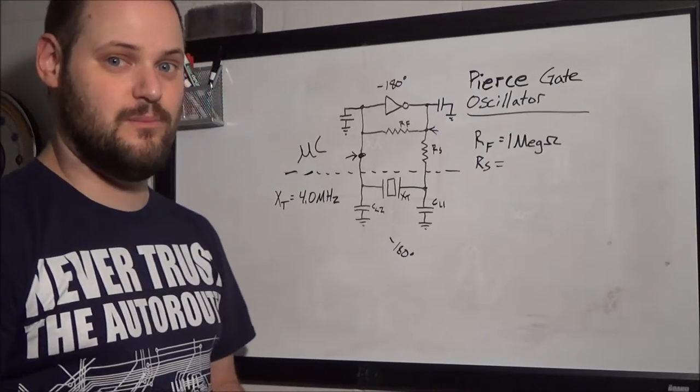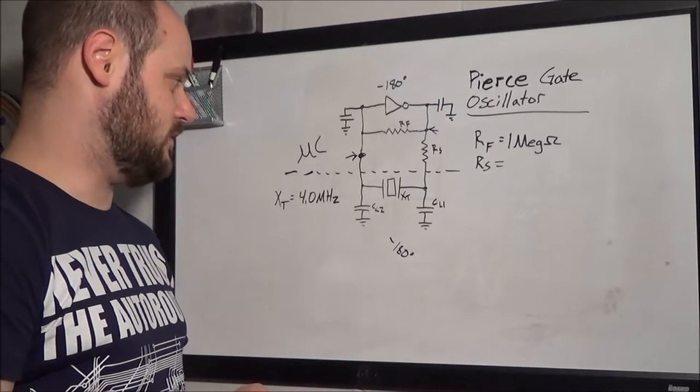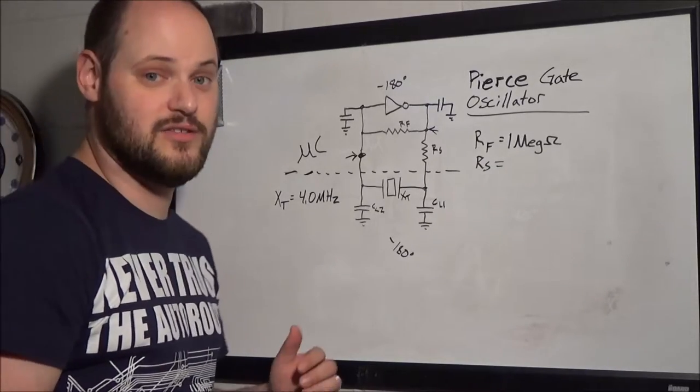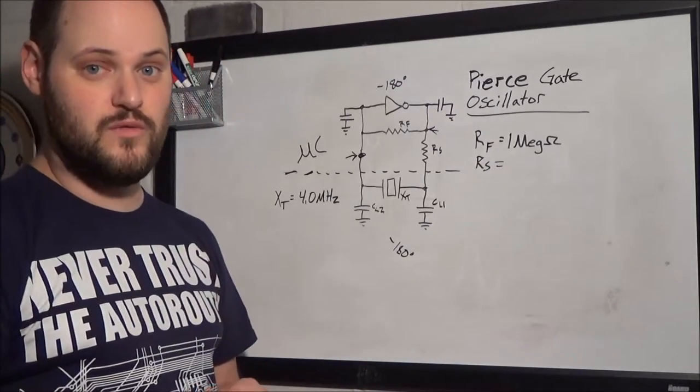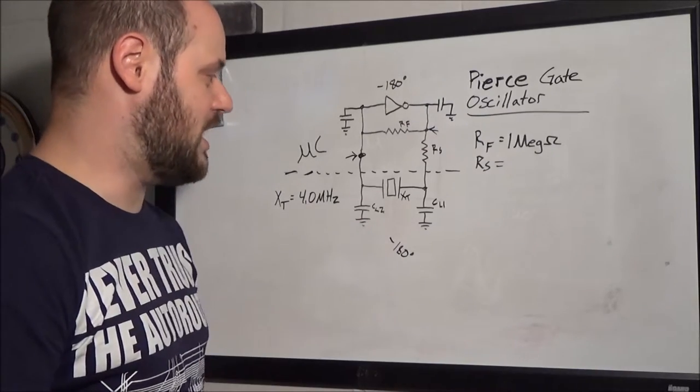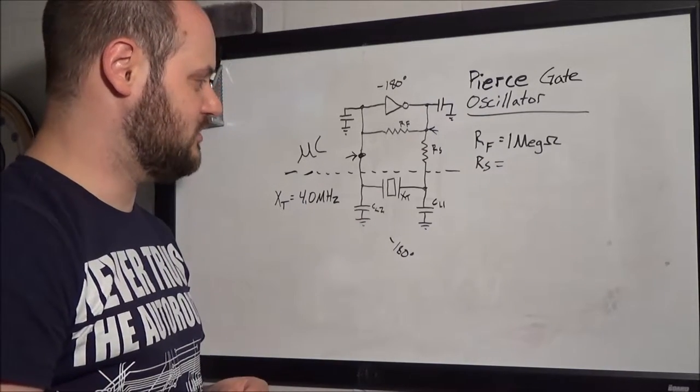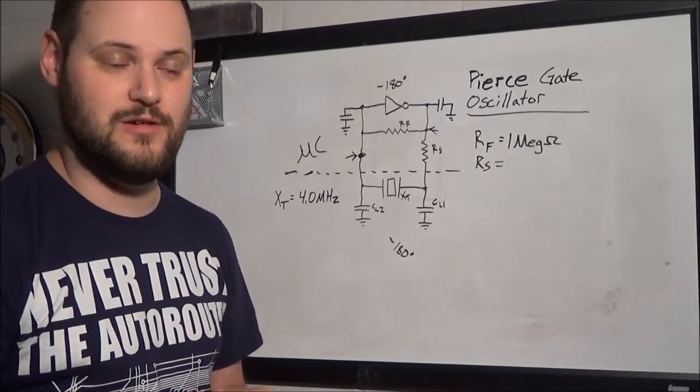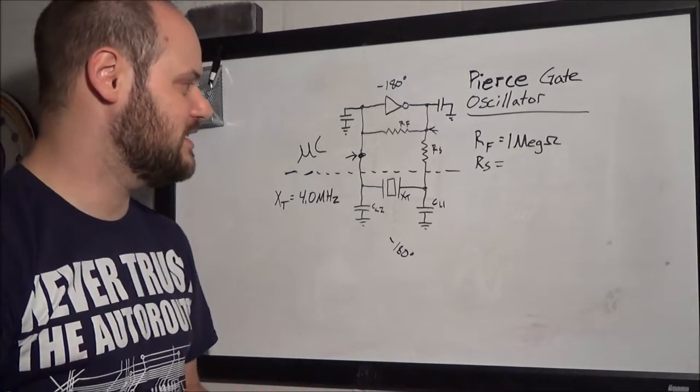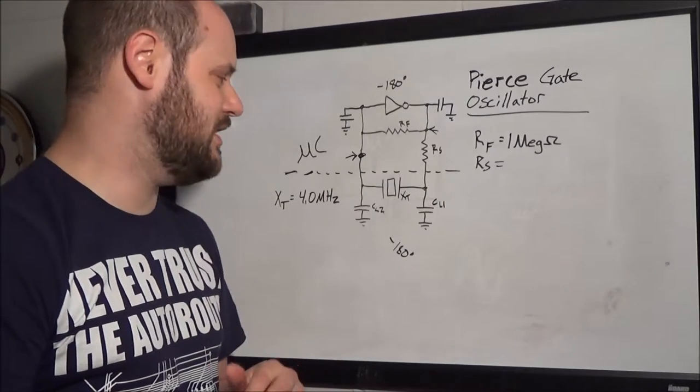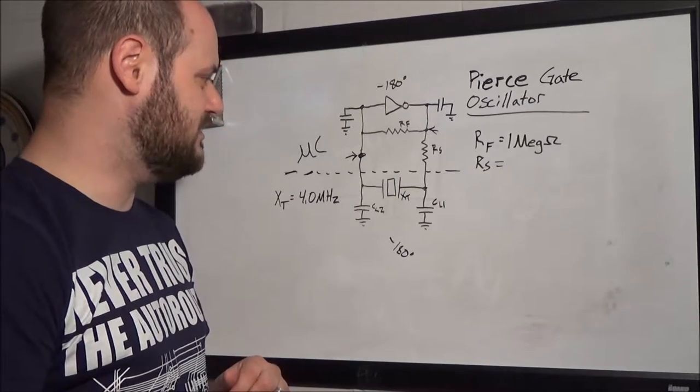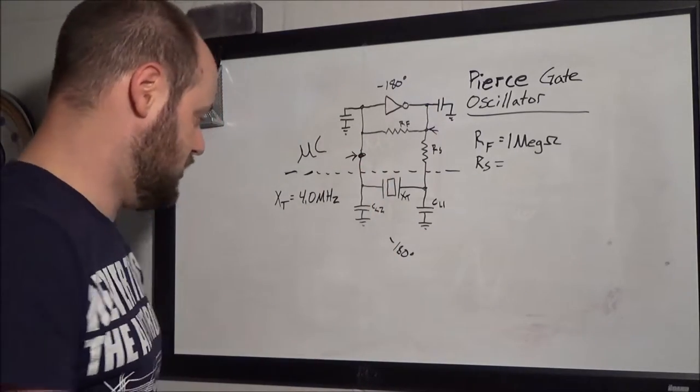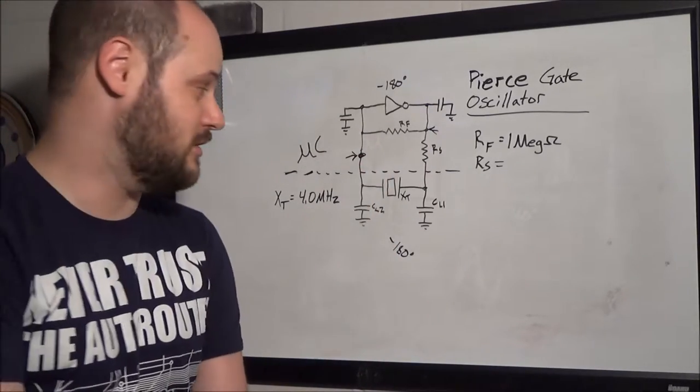So, when you buy a crystal from any given manufacturer, it's going to have a certain ESR and it's going to have a certain load value that it requires in order for it to oscillate properly. So, a typical value might be, say, 33 pico-farads or 20 pico-farads or 15 pico-farads, typically around in that range. So what that means is, this here is going to be oscillating at a given frequency. We know that frequency is 4 megahertz.